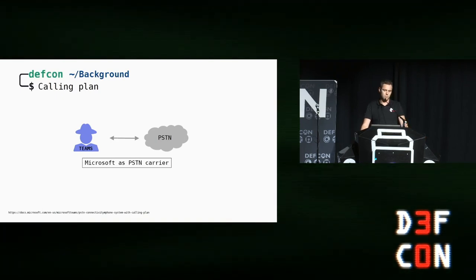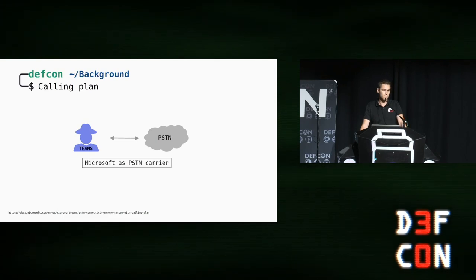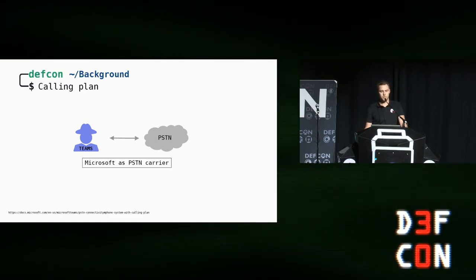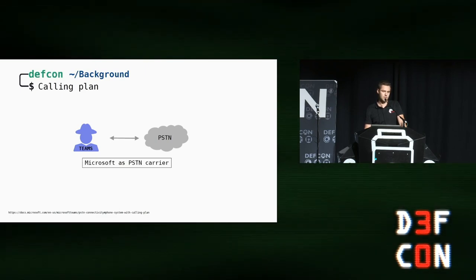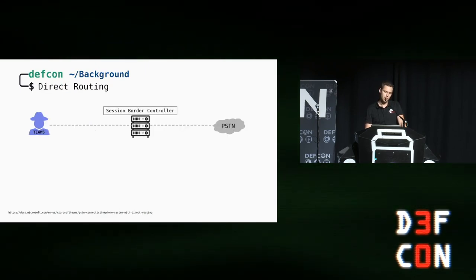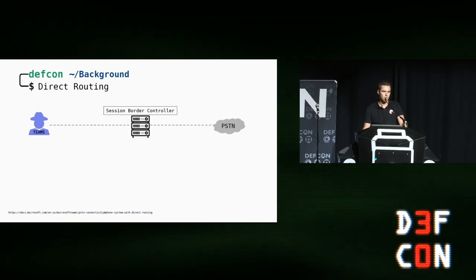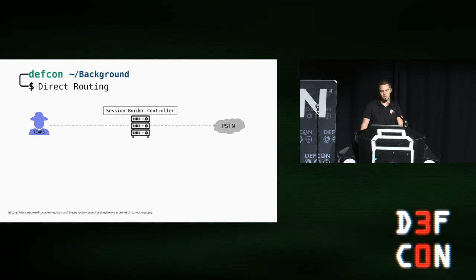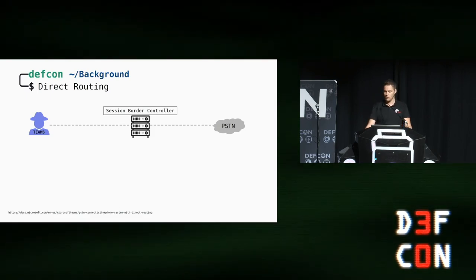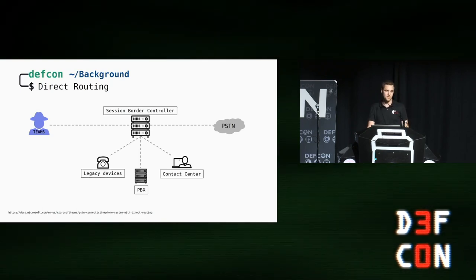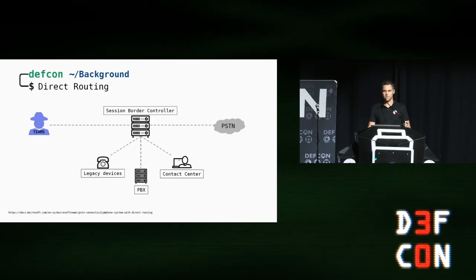This scenario is called calling plans. However, if you want to use your existing telephone carrier, you have to choose the second scenario, which is called direct routing. Direct routing requires the operation of a dedicated session border controller, and this session border controller must be reachable from the Internet. This also enables the integration of your existing infrastructure, like a PBX, legacy devices such as fax, or a contact center.